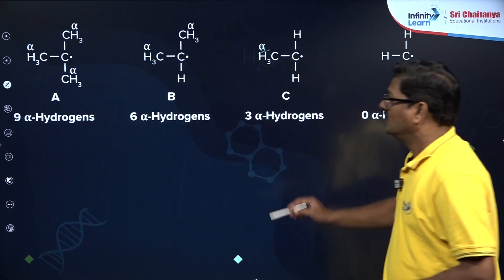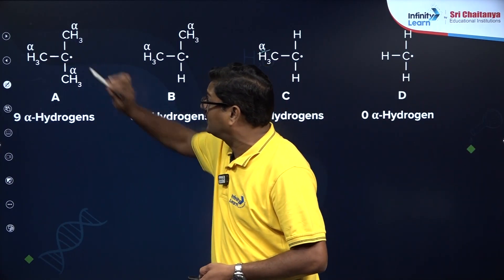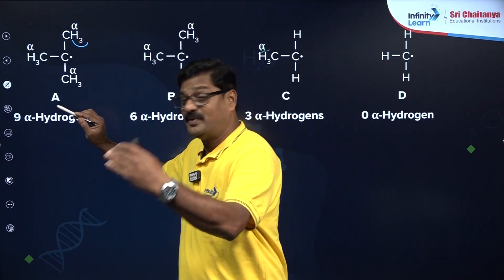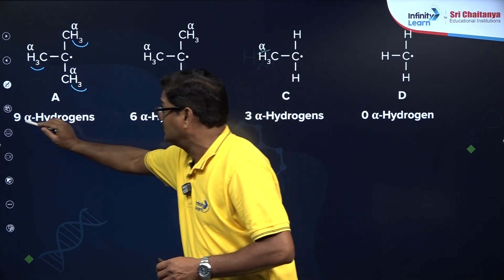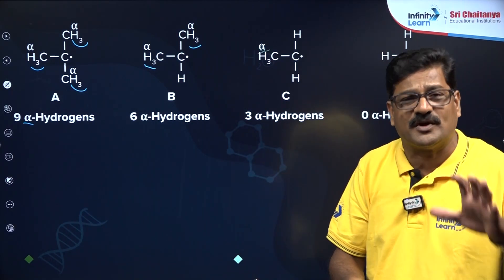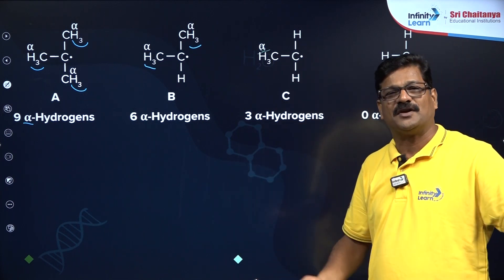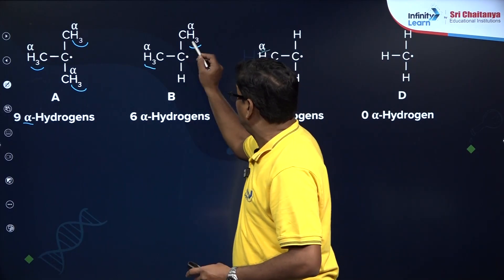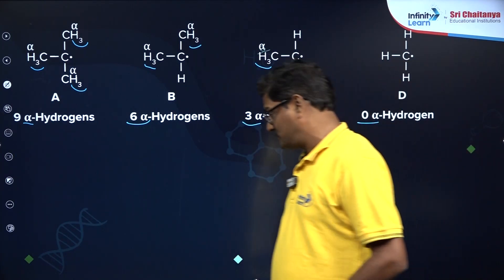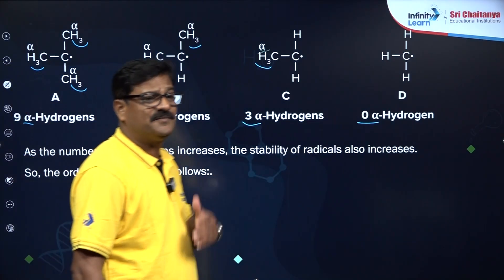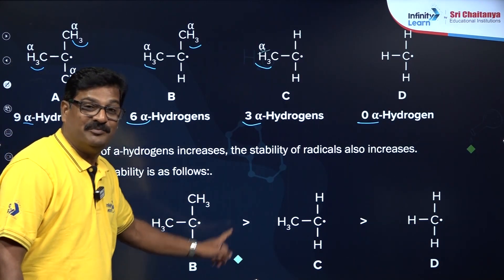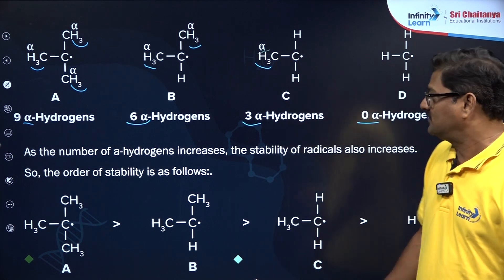The same approach applies to free radicals. The carbon with the odd electron is SP2 hybridized. Counting alpha hydrogens: 9 alpha hydrogens for the most branched, 6 for the next, 3 for the next, and 0 alpha hydrogens for the last. This is the simplest technique to handle hyperconjugation questions — just count the alpha hydrogens. As the number of alpha hydrogens increases, hyperconjugation structures increase and stability increases.